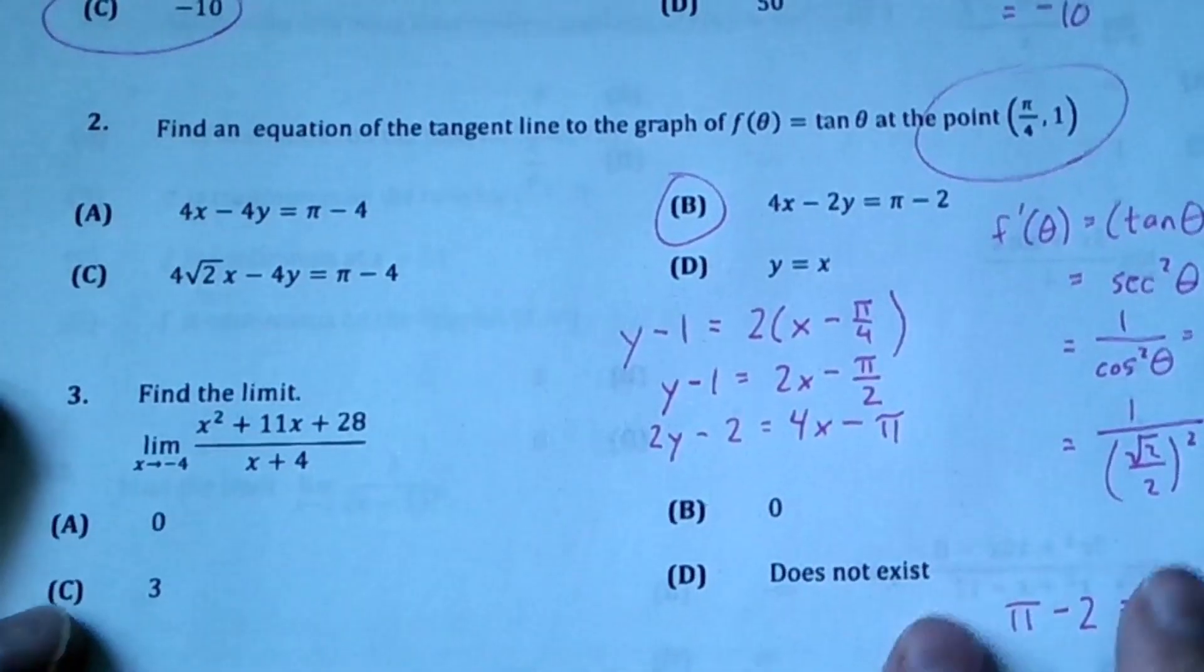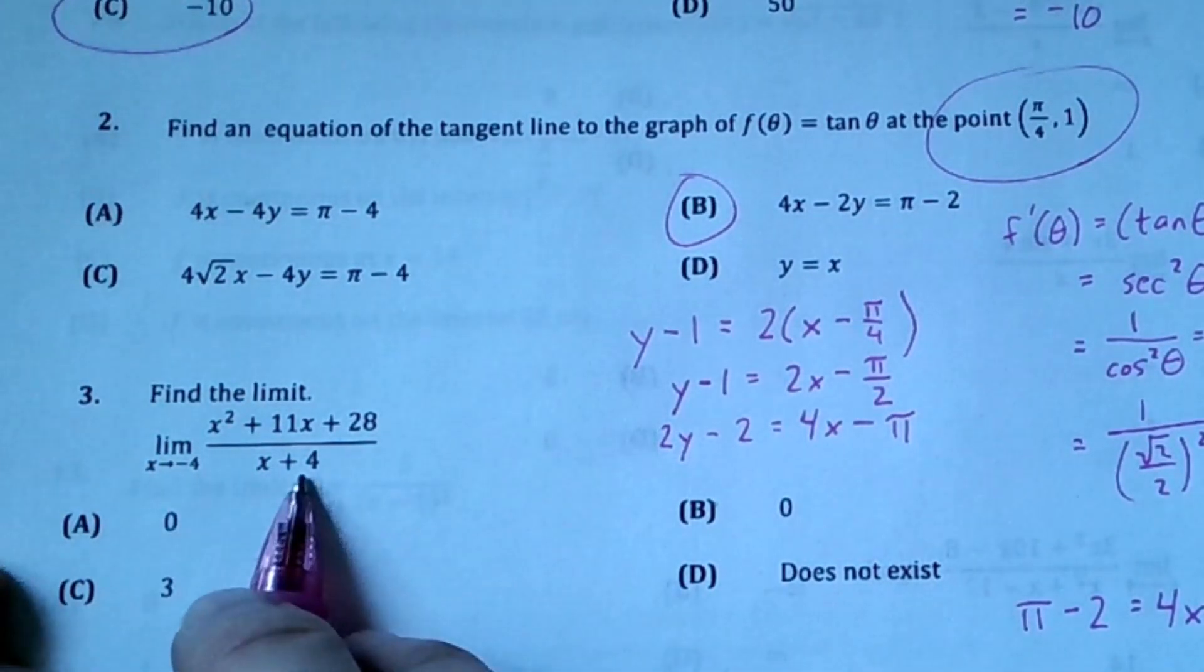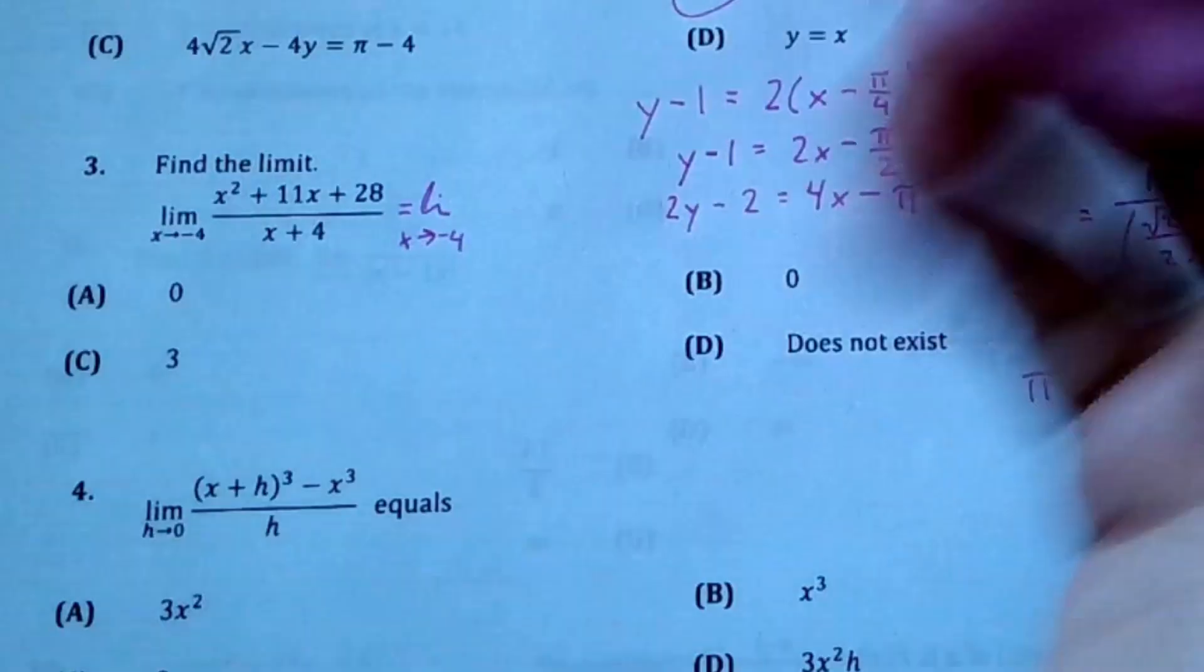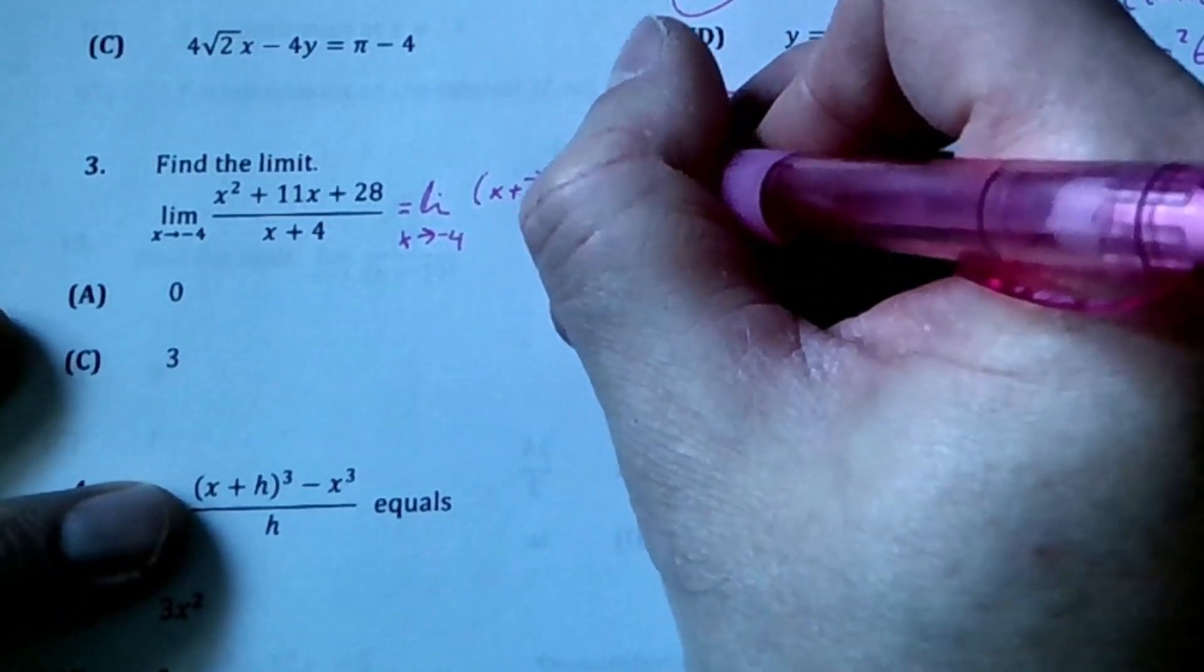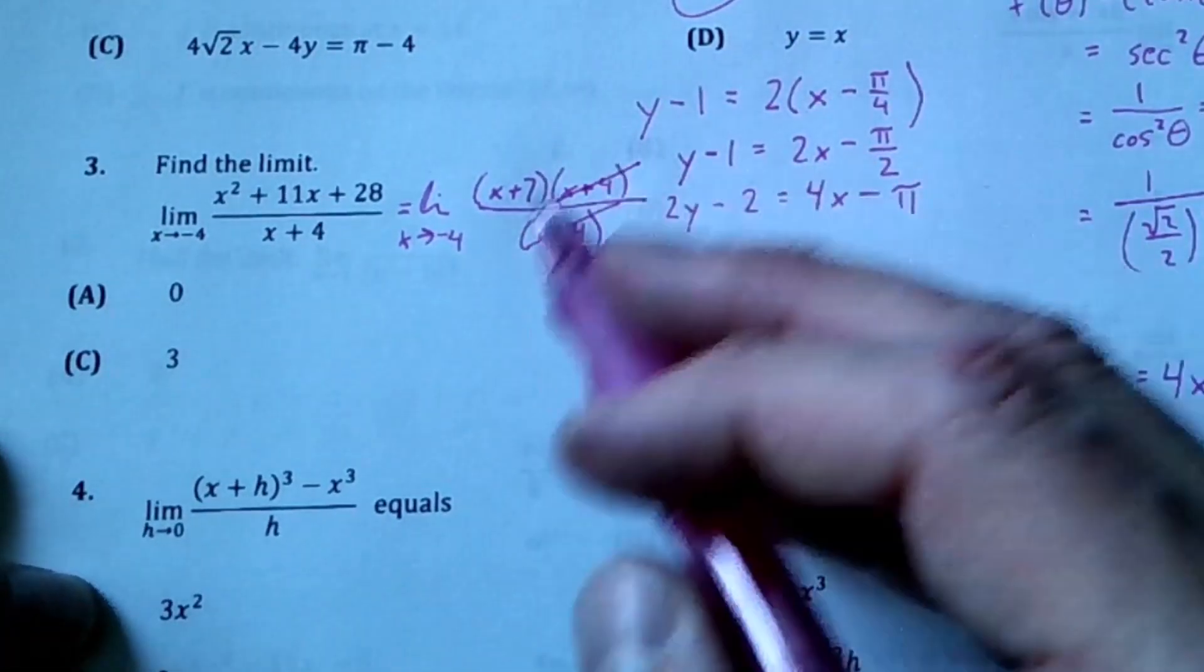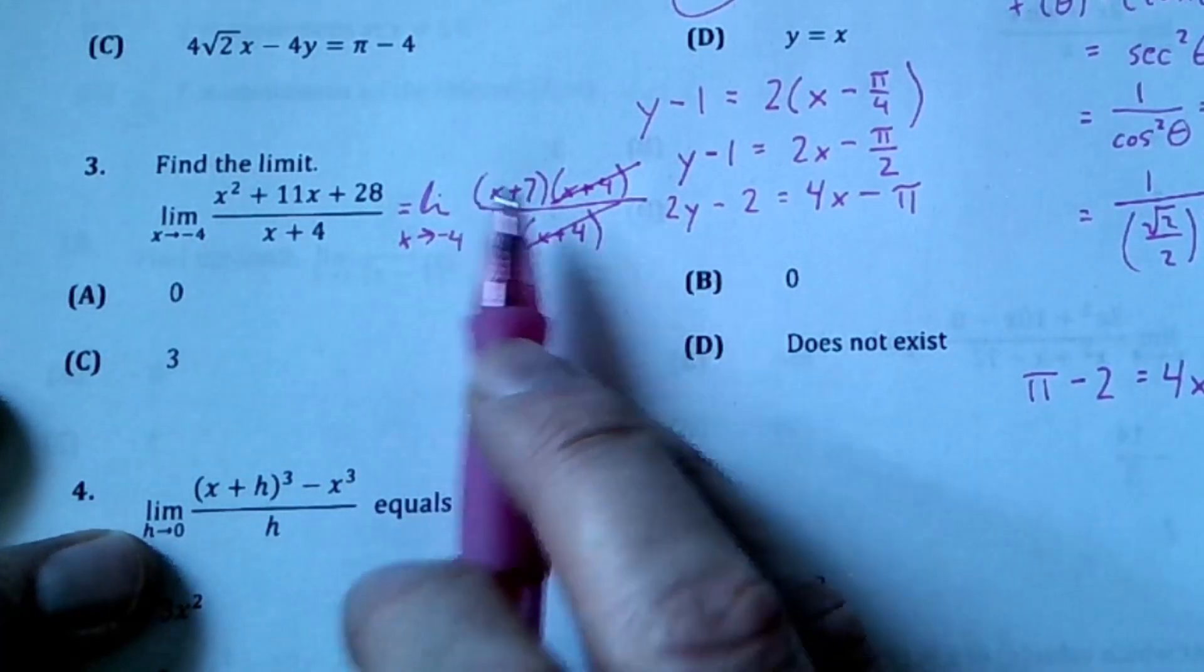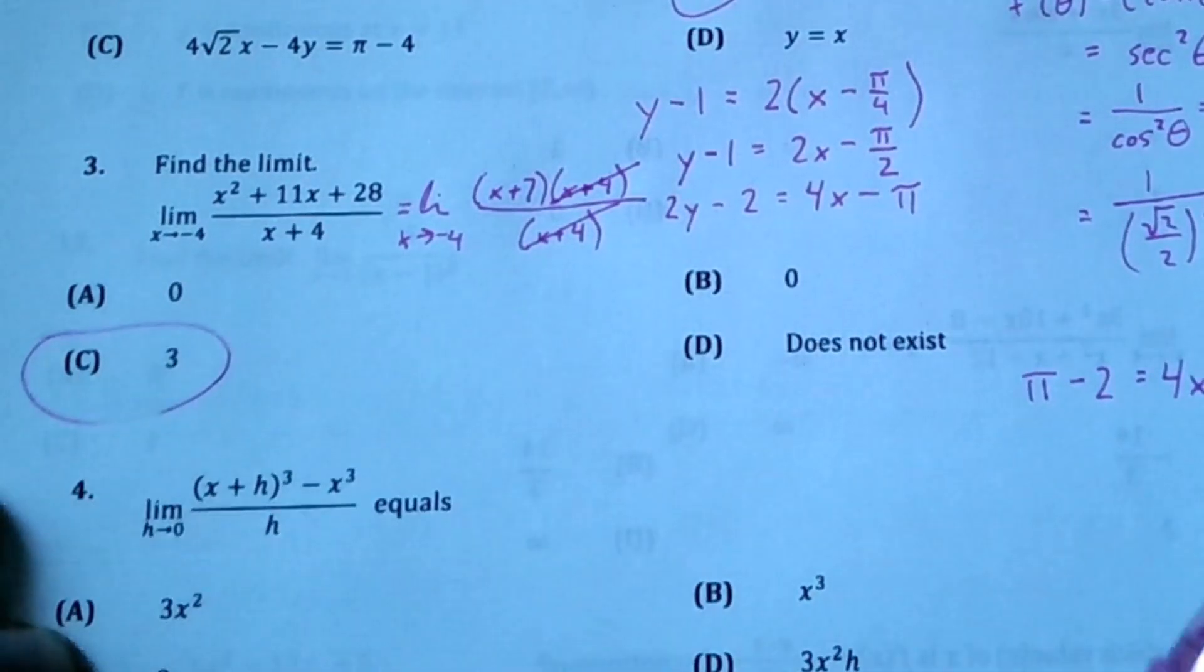Here we're going to find the limit. When I plug in direct substitution - always try it first - I get 0/0, so I need some tricks. The first trick is to factor as much as possible. Using the x method, I get plus 7 plus 4. Luckily that means I can cross these out, which means there's a hole at -4. As I approach -4, it approaches 3 because I can do direct substitution. The answer is 3, even though there's a hole the limit exists.